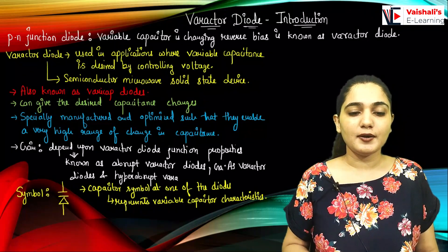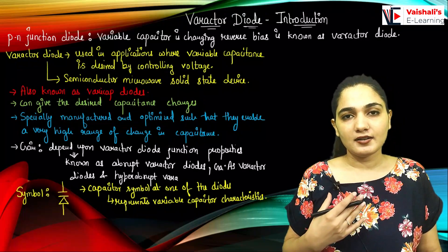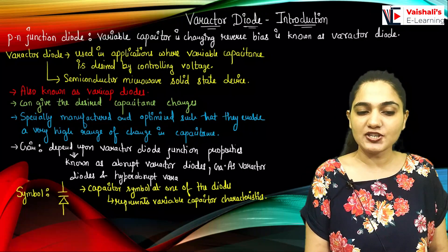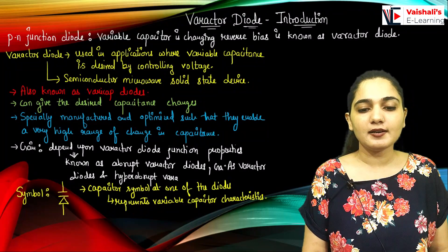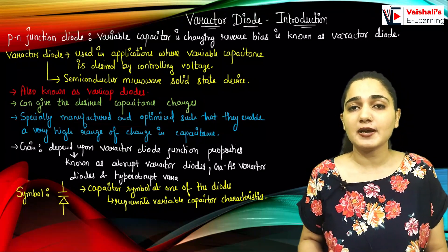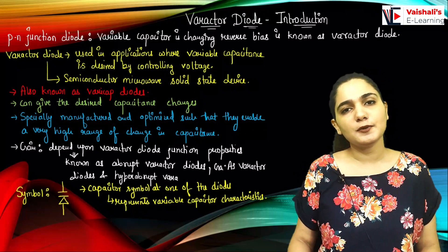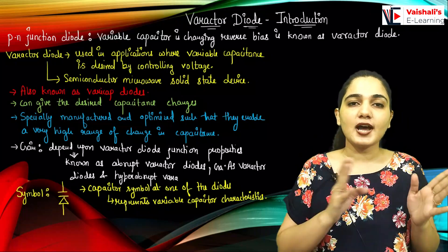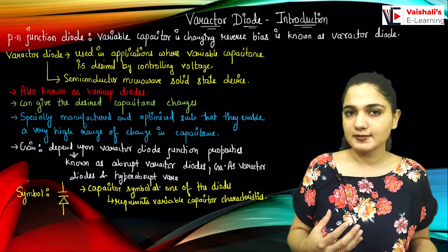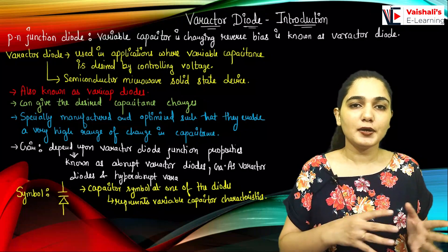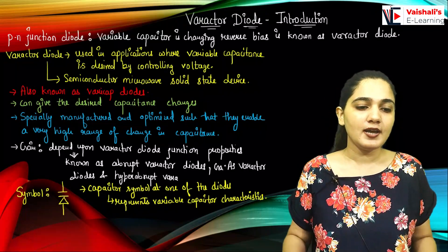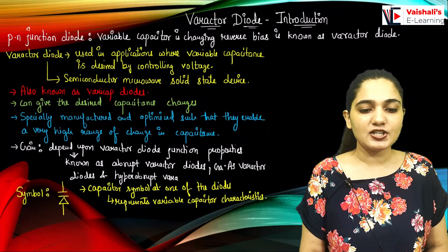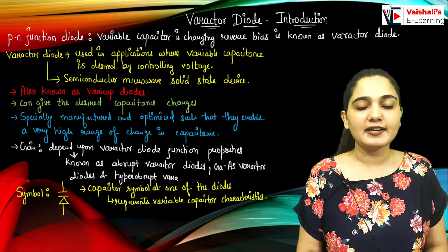What is a varactor diode? The varactor means the variable capacitor. So the capacitance of this diode is going to vary. It is a PN junction diode which is used as a variable capacitor. We can vary the capacitance associated with any PN junction diode by changing the reverse bias. So any diode by which I can change the capacitance by changing the reverse voltage applied to it is the varactor or variable capacitor diode. The varactor diode is used in various applications where variable capacitance is desired by controlling the voltage.